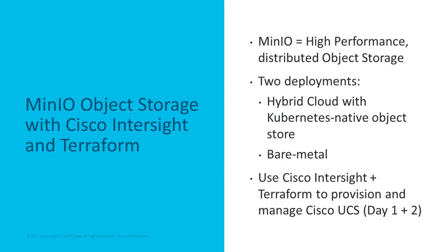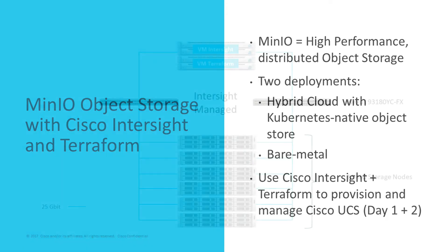Before we look at the day two operations, a few words about the whole project. We have MinIO object storage, which is a lightweight, high-performance distributed object store that can be deployed in two ways: either as a Kubernetes-native object store or on bare metal. We used bare metal and deployed the whole environment with Cisco InterSight and the Terraform provider for Cisco InterSight. In the same way, we use Cisco InterSight and Terraform to do day two operations on MinIO storage, and that's what I'm showing you on the next slides.